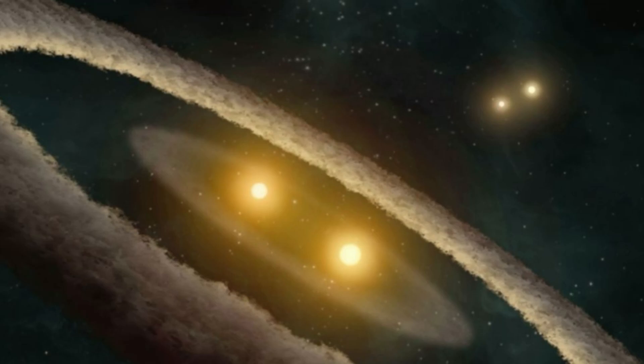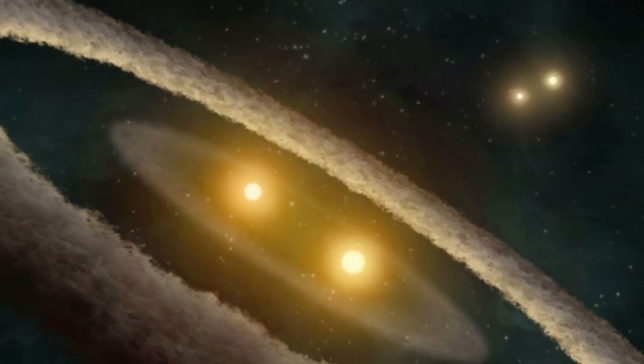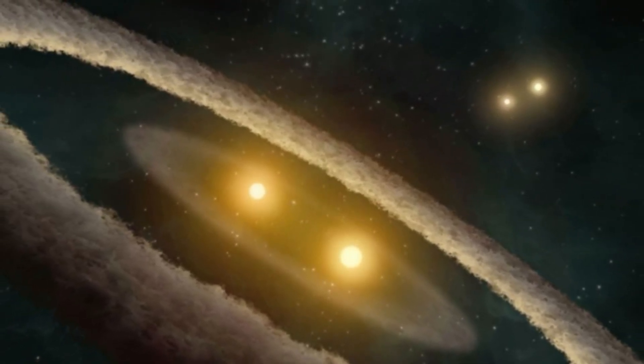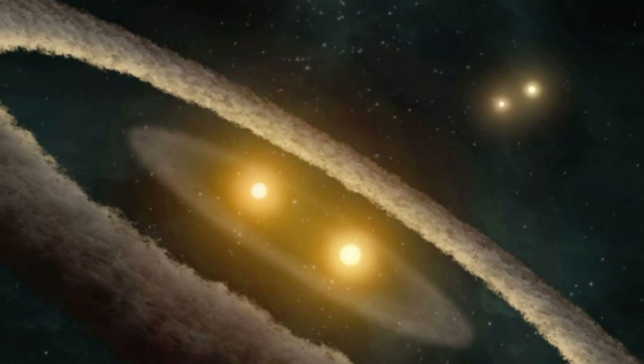Triple star systems are not that uncommon. As many as 10% of star systems in the universe could be tertiary, according to NASA. In September 2021, astronomers detected a single exoplanet orbiting a tertiary system for the first time, suggesting life could potentially exist in these systems.